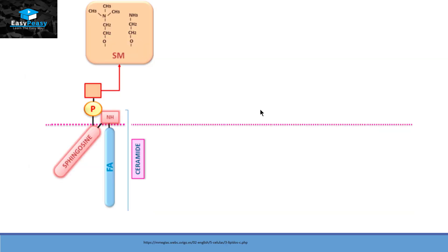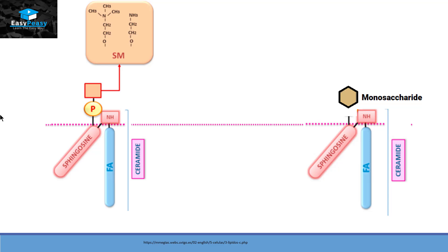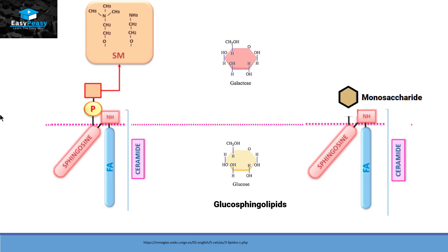In both cases this compound is called sphingomyelin. The glycolipids present on the surface of the cell membrane look similar to sphingomyelin, except that instead of phosphate, a monosaccharide attaches itself to sphingosine. If this monosaccharide is glucose, the compound is called glucosphingolipid; if it is galactose, it is called galactosphingolipid.